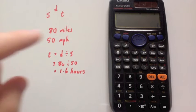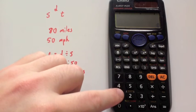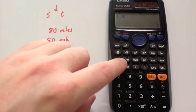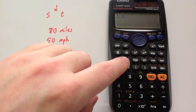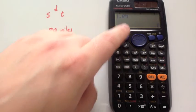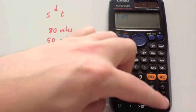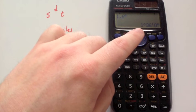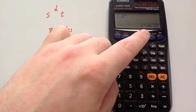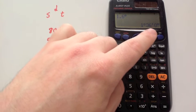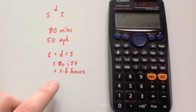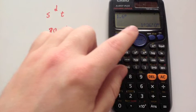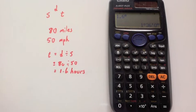Another way you can do it is on your calculator — just type in the 1.6 and then press this button here. If you press that button you will get that symbol appearing above it, then press equals and you will get your answer: it's 1 hour 36 minutes, no seconds. So it's converted the time from hours into hours, minutes and seconds for you.